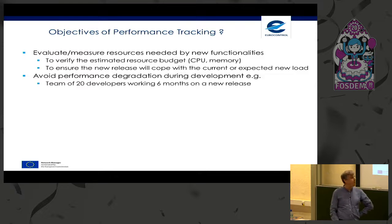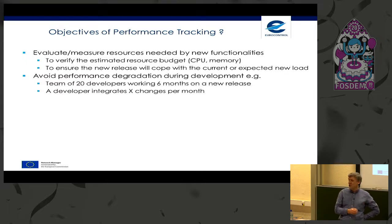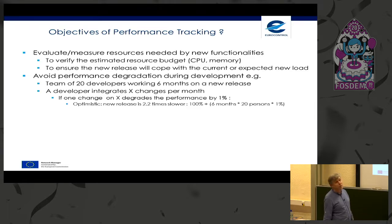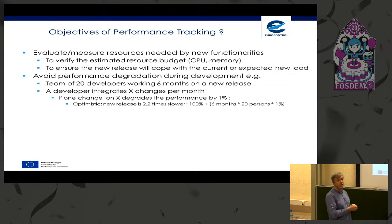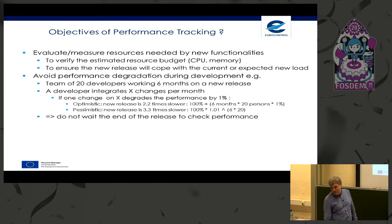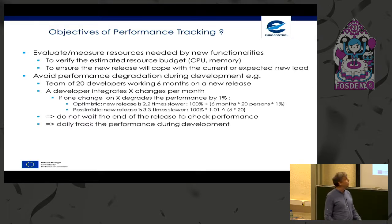Imagine we have a team of 20 developers working six months on a new release — that's about the size of the team on this application. If each developer integrates X changes per month, and one change in X degrades performance by one percent, then optimistically after six months we have a new release which is 2.2 times slower. The pessimistic view is 3.3 times slower — starting from 100% times 1.01 to the power of 120. So clearly we have to do something and cannot wait until the end of the release to check performance.